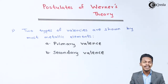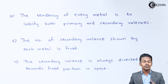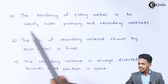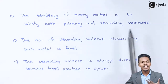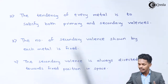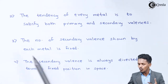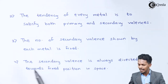Now let us understand in deep detail what is primary valence and what is secondary valence. The tendency of every metal is to satisfy both the primary and the secondary valencies. That is why the number of secondary valencies shown by each metal is fixed.